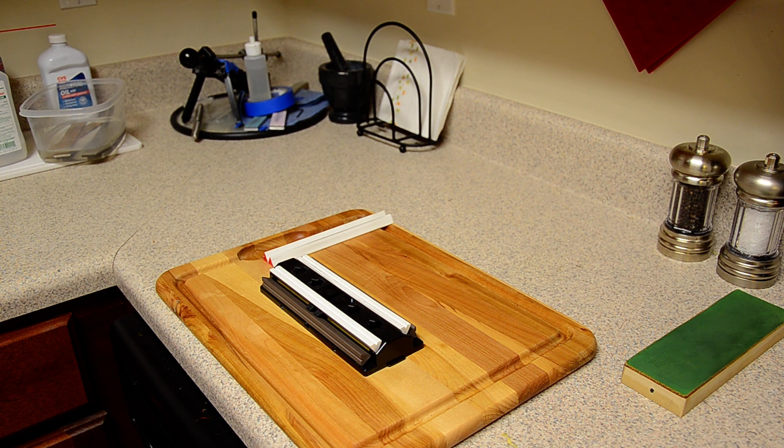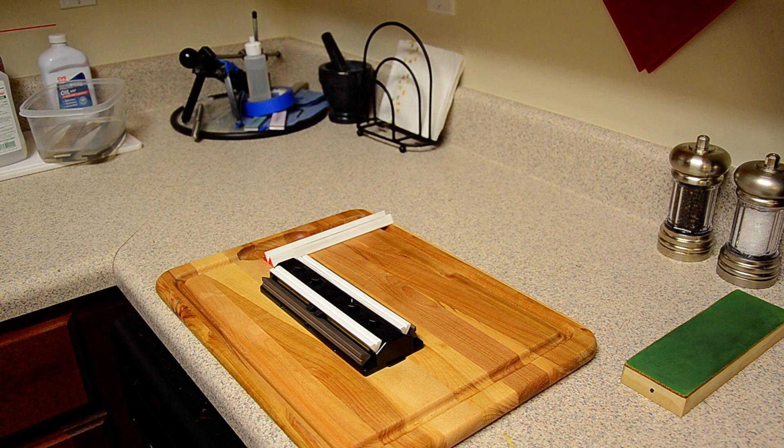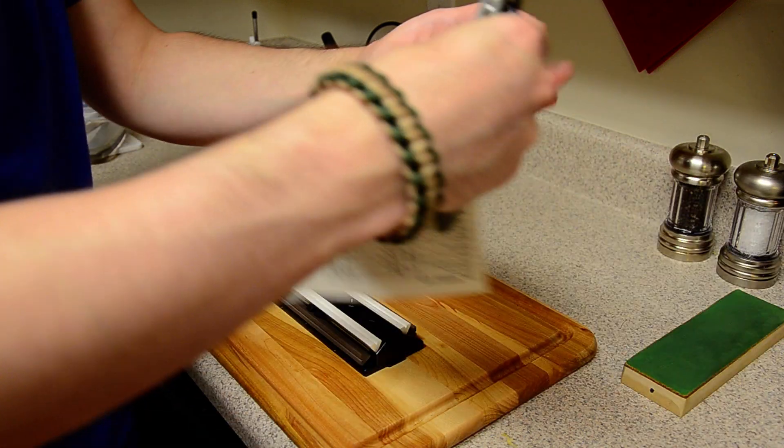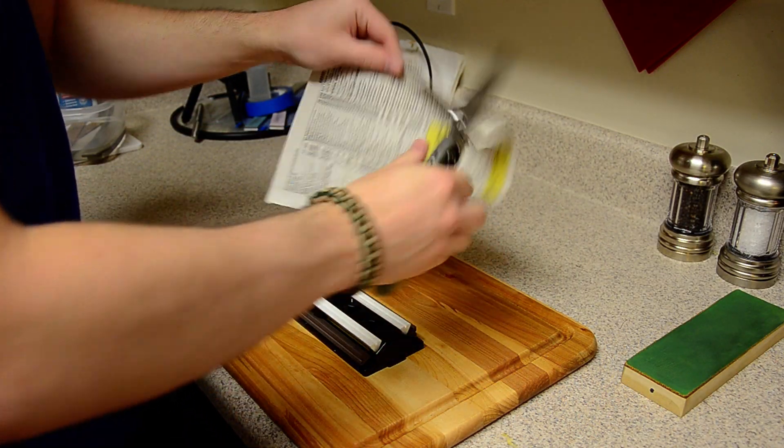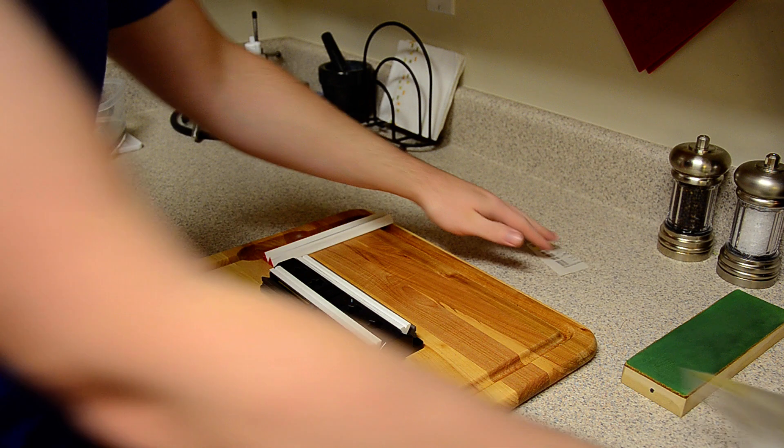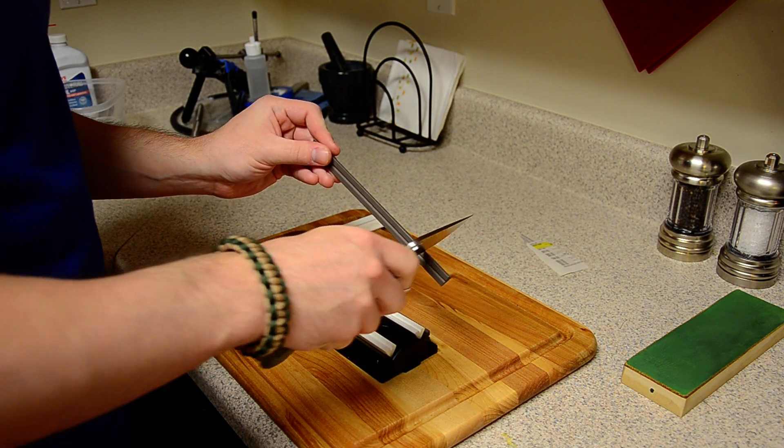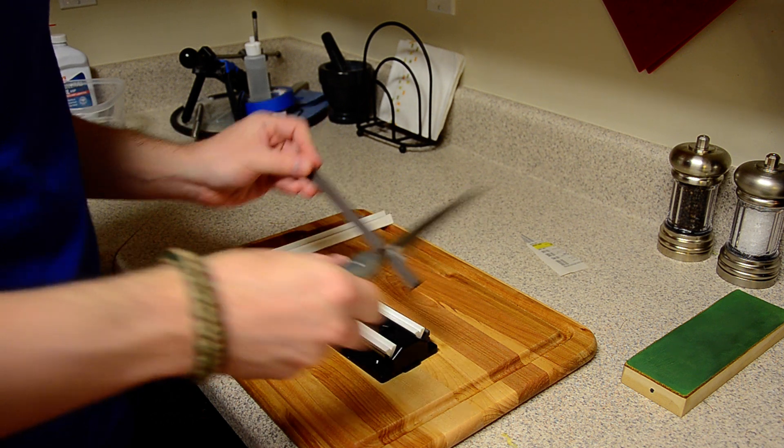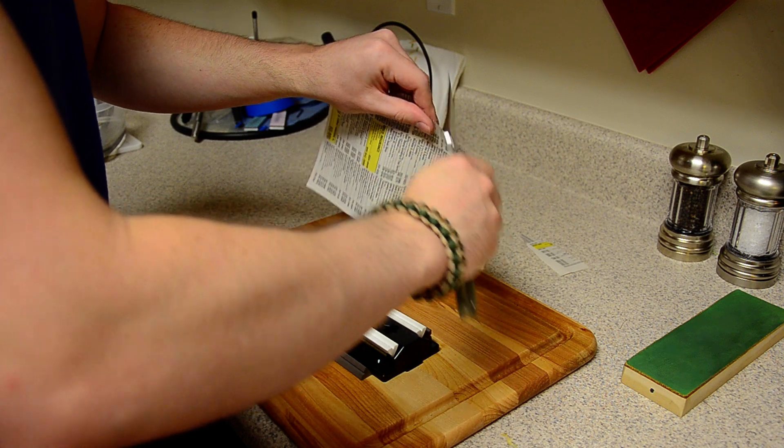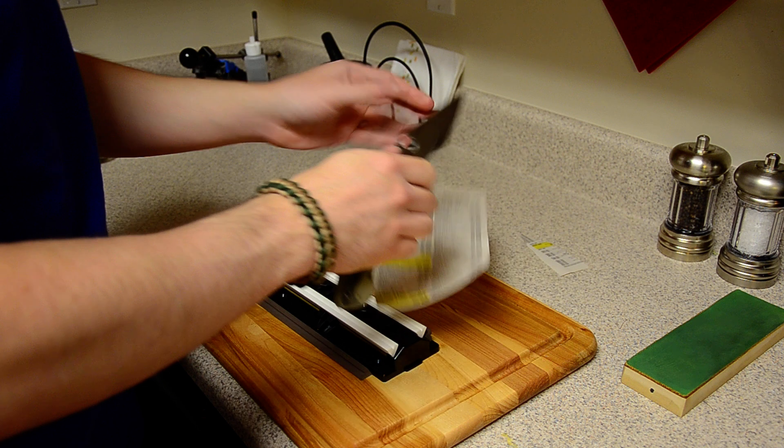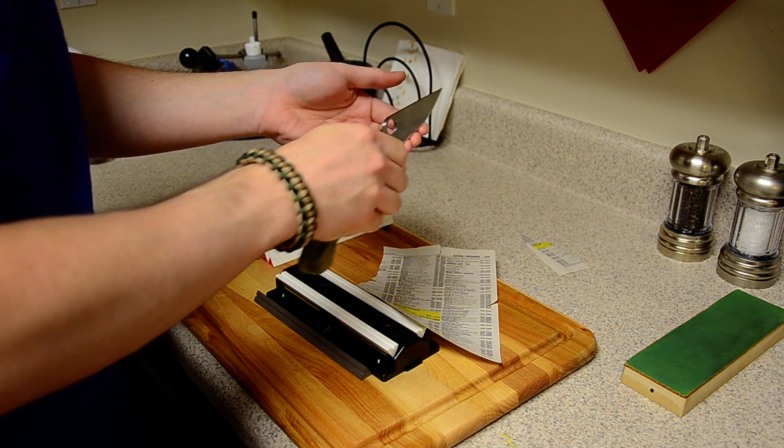So I think I'll just go ahead and sharpen with this thing. The edge isn't as dull as I would like, it can still roughly, very roughly cut phone book paper. So what I'm going to do is just dull the edge a little bit. That should do the trick, yep pretty much non-existent bevel now.